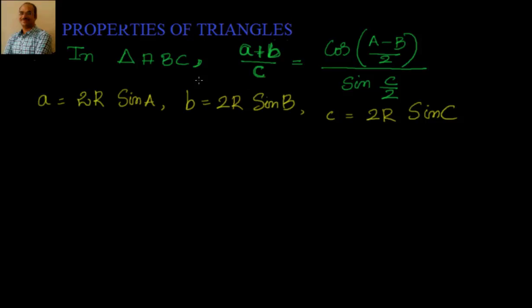In triangle ABC, we have to prove that (a+b)/c equals cos((A-B)/2) divided by sin(C/2). Now, we will just leverage the law of sines where we know a equals 2R sin A, b equals 2R sin B, and c equals 2R sin C.